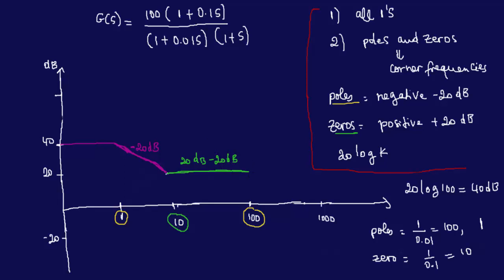So now I'm at 100. What's 100? 100 is a pole. A pole is a negative slope. A pole is a negative slope of minus 20 dB. So minus 20 dB plus the previous slope which was 0 — so I'm supposed to have a negative slope of minus 20 dB. So I start drawing that at 100.